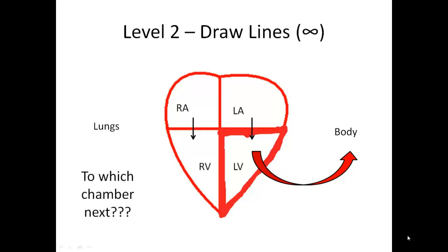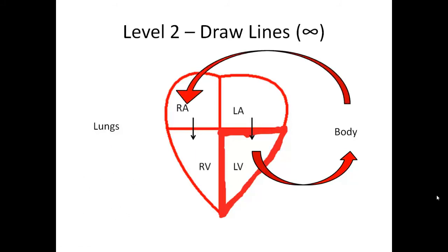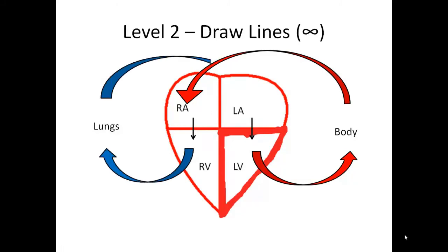The next thing is which chamber to head to next. We can use a process of elimination. If blood came back from the body to the left atrium, it would cycle endlessly through the left side with no purpose for the right heart. If it went to the right ventricle, there'd be a head-on collision. So our last option is to go up and around down into the right atrium. From the right atrium, it flows down to the right ventricle, around to the lungs, and back to the left atrium.